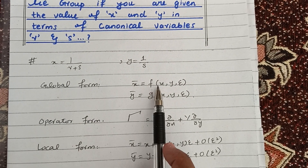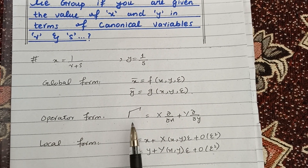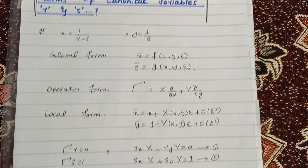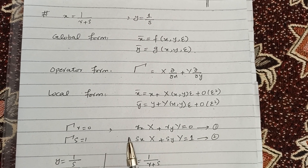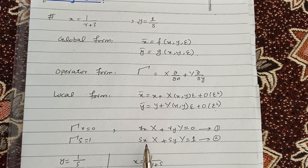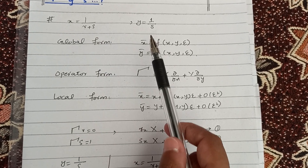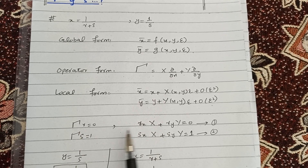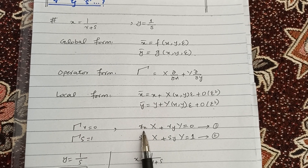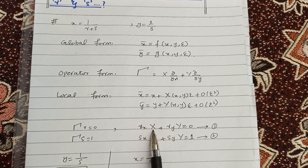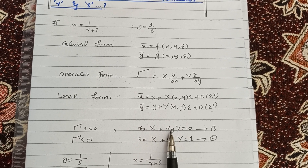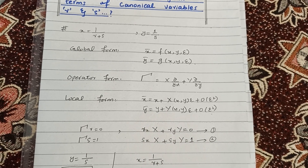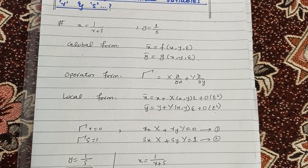The global form of a Lie group is given by one expression, the operator form by γ equals a certain value, and the local form by another. As derived in the previous lecture, the system of equations for canonical variables is given by γr = 0 and γs = 1, where γr equals the partial derivative of r with respect to x times capital X (the infinitesimal) plus the partial derivative of r with respect to y times capital Y. We know that X and Y are the values of the infinitesimals.